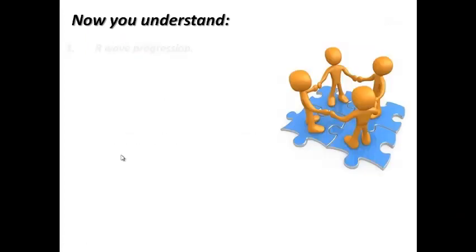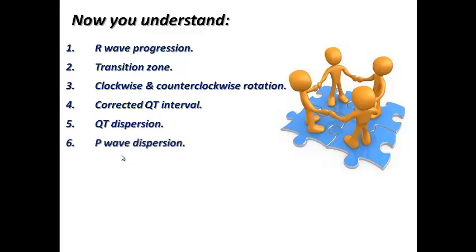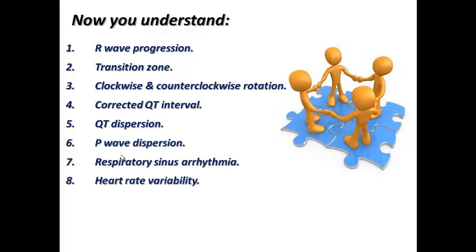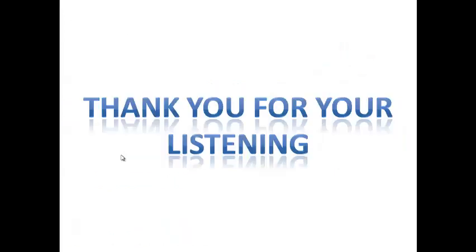In summary, today we covered R-wave progression and the transition zone in precordial leads; clockwise and counterclockwise rotation; corrected QT interval; QT dispersion — important in long QT syndrome; P-wave dispersion — a predictor of atrial fibrillation; heart rate variability — a physiological Holter ECG phenomenon; respiratory sinus arrhythmia — a physiological normal variant; T-wave alternans — a rare but grave sign; secondary repolarization abnormalities; and dominant R-wave in aVR. Thank you very much for listening.